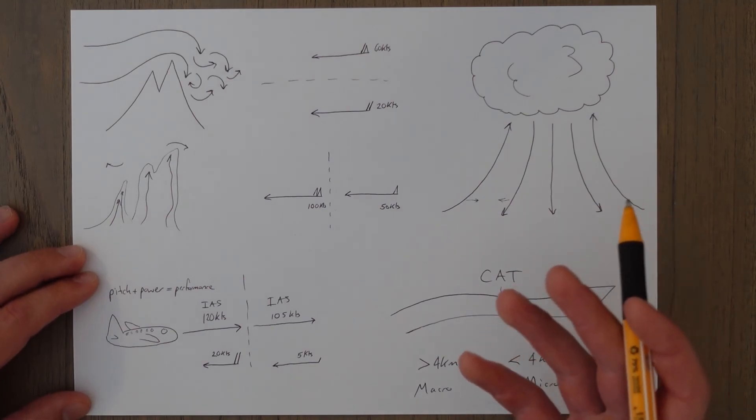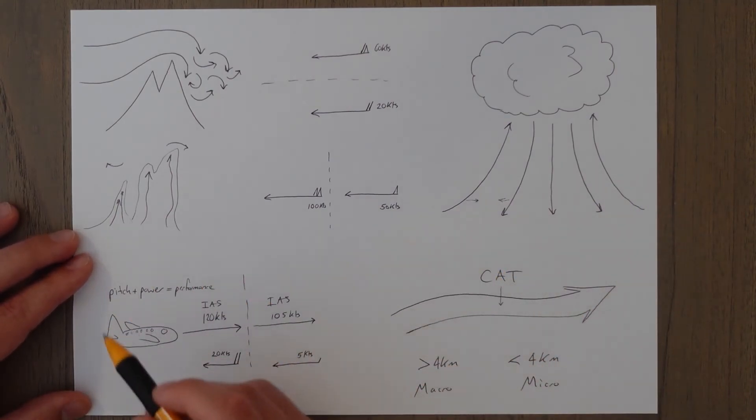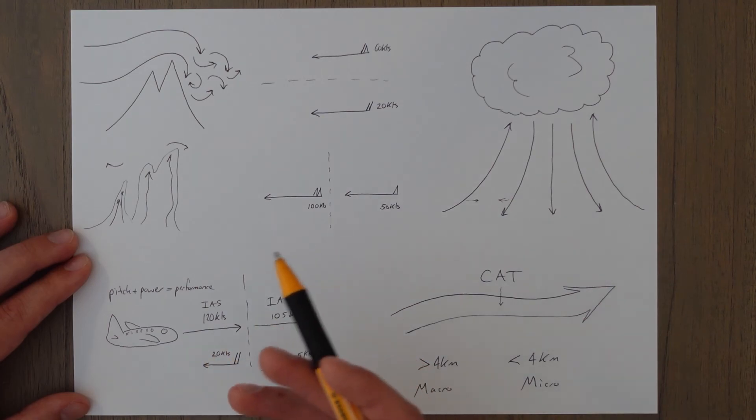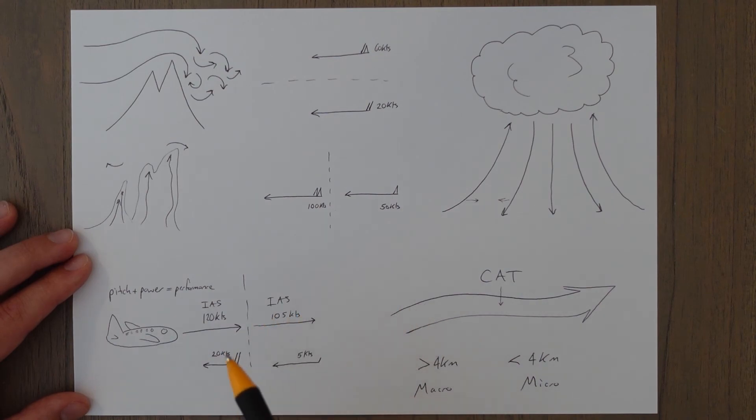So wind shear and downdrafts in general are bad for aircraft because it affects our performance. So pitch plus power equals performance. And we've got our pitch and our power set to achieve 120 knots forward speed. We suddenly lose 50 knots of this wind, and then we suddenly have an indicated airspeed of 105 knots. But our power would be set to achieve 120 knots, so in this area we'd have far too much power set, we start to speed up, which in this case would correct itself because eventually we'd get back up to 120 knots. But if it was the other way around, we could have too low a power set and cause the aircraft to stall, for example.